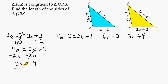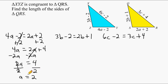Next we divide both sides by 2, because the inverse of multiplying A by 2 is to divide by 2. 2 divided by 2 is 1, leaving us with 1A. On the right-hand side, 4 divided by 2 is 2. So A equals 2. But 2 is not the length of the line segment — we must substitute A with 2 in the expression. So 2 times 2 is 4, and 4 plus 2 more is 6. The length of line segment SR is equal to 6.